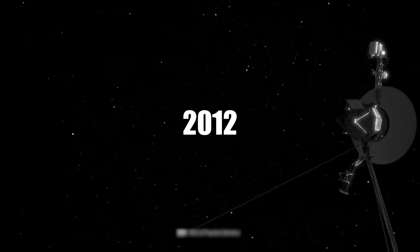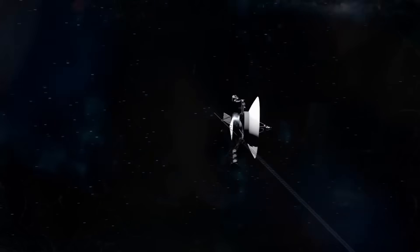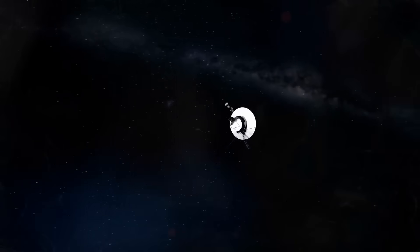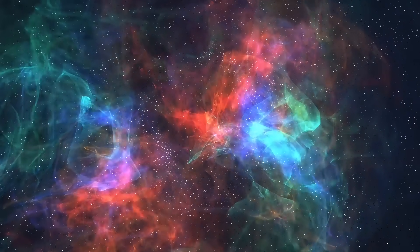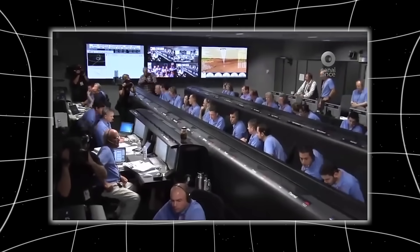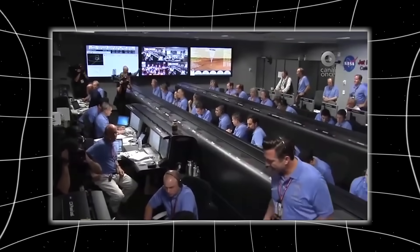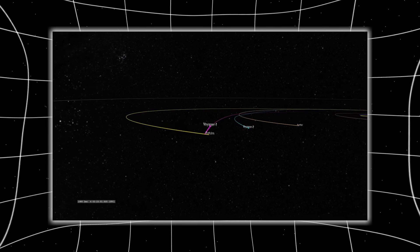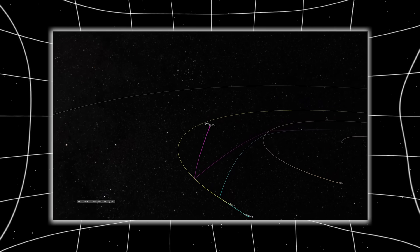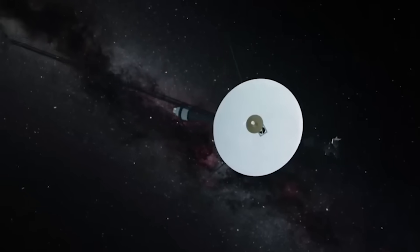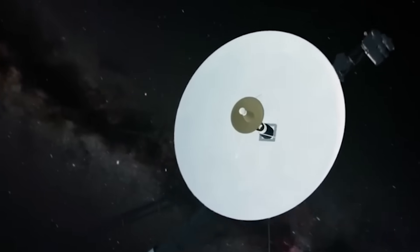By 2012, Voyager 1 was supposed to cross the heliopause, but when it finally transmitted signs of increased plasma density, a clear indicator, it also sent back something profoundly confusing. The magnetic field direction didn't change. Scientists expected the interstellar magnetic field to differ from the sun's, but instead the readings matched perfectly. It was as if Voyager had moved into a new region without the field redirecting at all, contradicting decades of theoretical predictions. This was the first major clue that something was deeply misunderstood about our solar system's true edge.